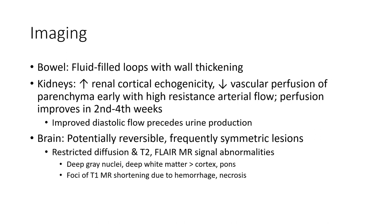On imaging, ultrasound will show increased renal cortical echogenicity. Early perfusion of parenchyma shows higher resistance arterial flow. Improvement in diastolic flow precedes return of urine production. On brain MRI, symmetric lesions with restricted diffusion are seen. Signal abnormalities are present in the deep gray nuclei, deep white matter more than cortex, with T1 shortening due to hemorrhage and necrosis.